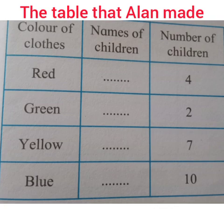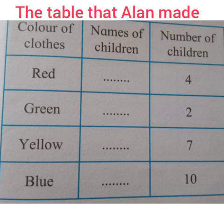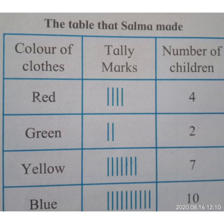For green, 2 children were wearing green color. Then yellow 7 and blue 10. Now see the table that Salma made, with columns: color of clothes, tally marks, and number of children. For red color, 4 children were wearing red clothes, so she made 4 single lines — 1, 2, 3, 4 — under the tally marks column and wrote number of children: 4.